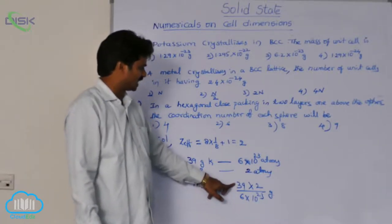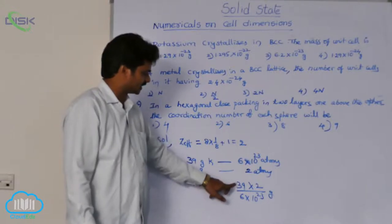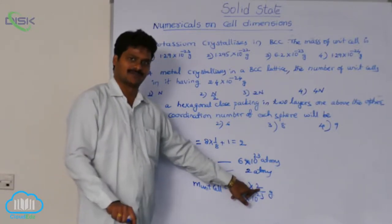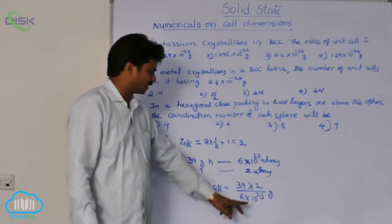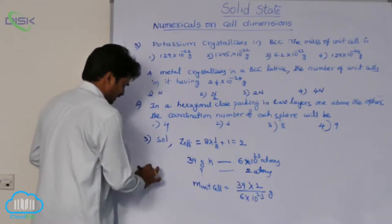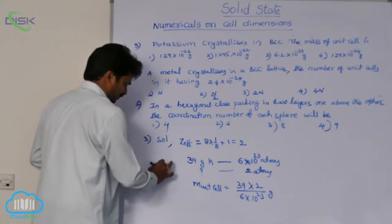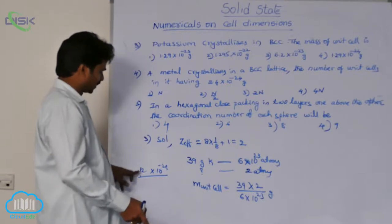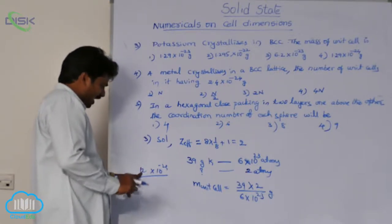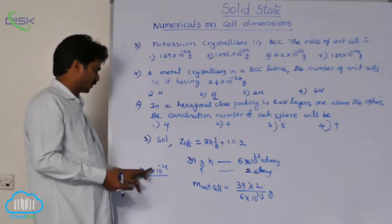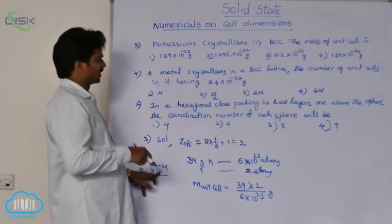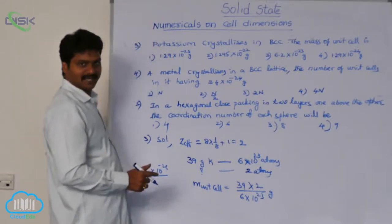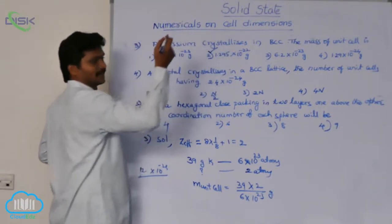How many times does 6 go into 39? Nearly 6 times. So 6 into 2 gives 12. We get 12-point-something × 10⁻²³, which means 1.2-something × 10⁻²² grams. That answer corresponds to the second option.